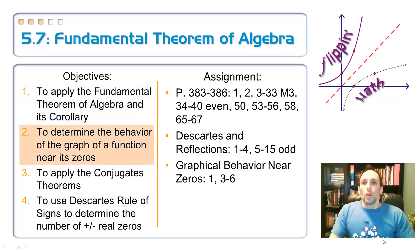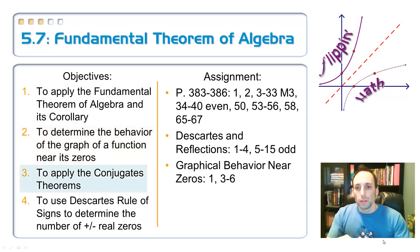A corollary is, think of it like a baby theorem. So once you have the actual theorem, this is a consequence of it and then it's very easy to prove afterwards. Number two, whenever I go to graph these things, what does the graph look like? A polynomial graph around its zeros. And you'll see that there's basically two cases there. It's pretty easy.